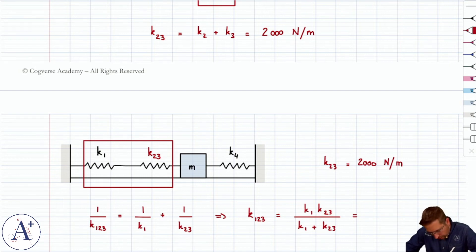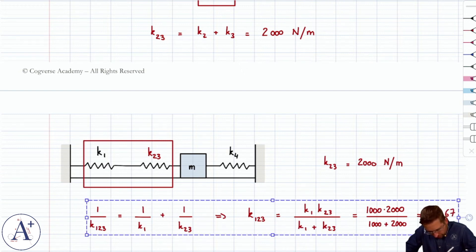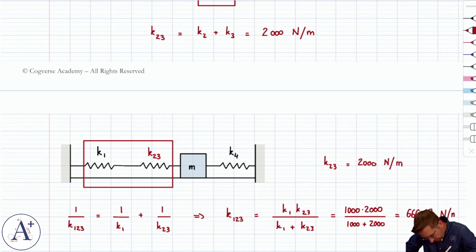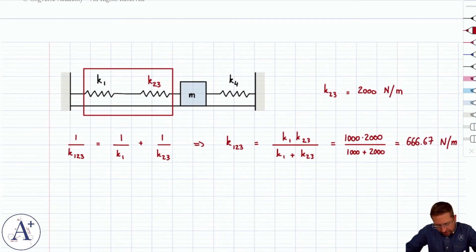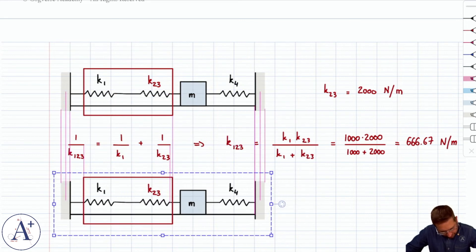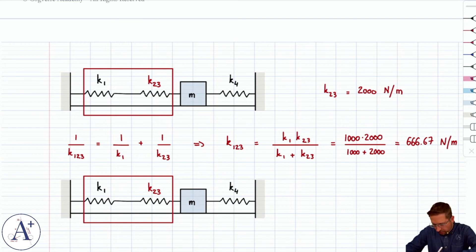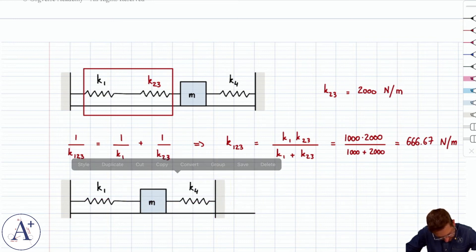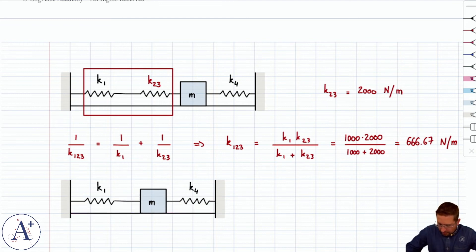And so what's k1? Well, k1 is 1,000, 2,000. This is 2,000 divided by 1,000 plus 2,000. And so that's going to be 666.67 newtons per meter. And that's your equivalent spring constant. So we can then take this arrangement and simplify it one step further by replacing these two springs in series by a single equivalent spring. So let's do this. k1,2,3.